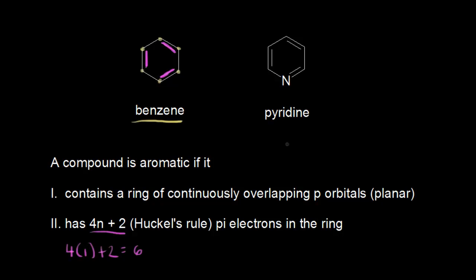If we look at the pyridine molecule, pyridine is an analog to benzene. The only difference is that pyridine has a nitrogen in the ring instead of one of the carbons. So we say that pyridine is a heterocycle — a cyclic compound that contains a heteroatom in the ring. A heteroatom is any atom other than carbon, such as nitrogen, oxygen, or sulfur. And heterocycles can be aromatic too.